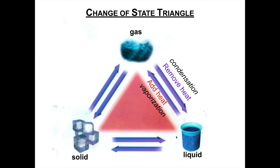Now we're going to move on to the next one: a solid changing into a liquid. What's that change of state called? It is called melting. When that happens, are the particles in a solid closer together or farther apart than in a liquid? The particles are closer together in a solid and farther apart in a liquid. So in order for that to happen, we have to add heat. Heat is added to make something melt.